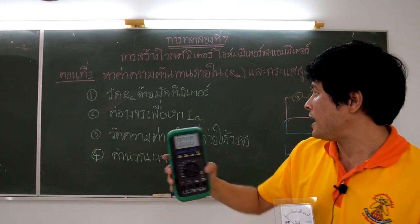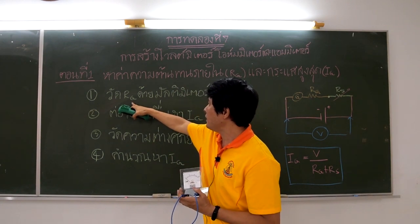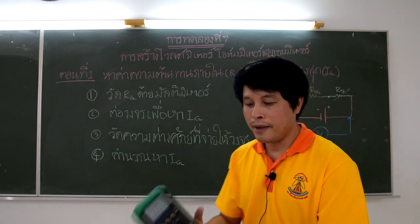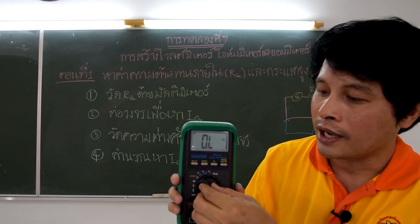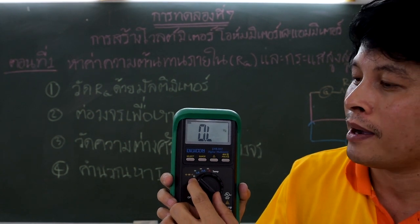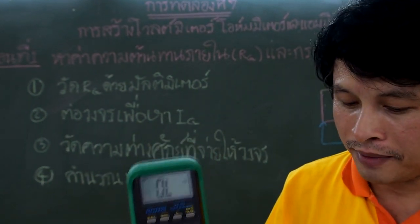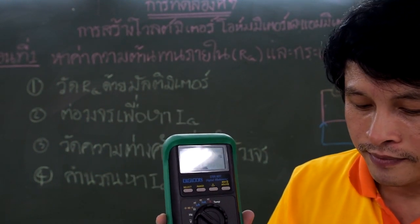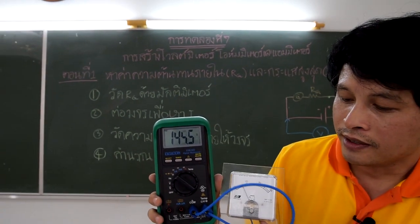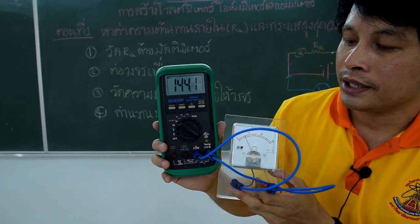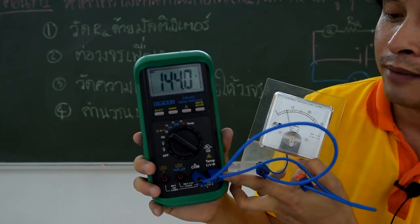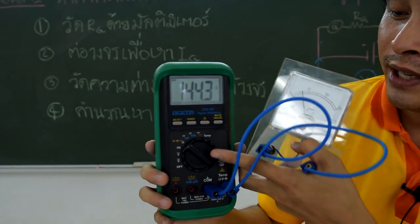The first step is to measure RG. We use a digital multimeter to measure the internal resistance of the galvanometer. Move the pointer of the digital multimeter to the omega symbol, which is ohmmeter mode. Connect the negative pole of the galvanometer to the COM terminal of the digital multimeter, and connect the positive pole of the galvanometer to the omega terminal. This is the method that measures RG, the internal resistance of the galvanometer.